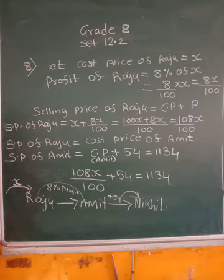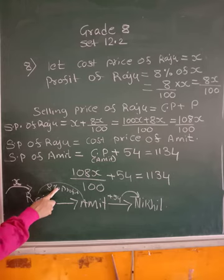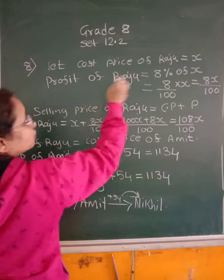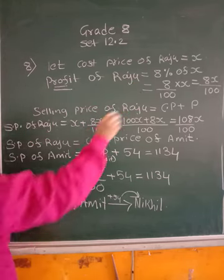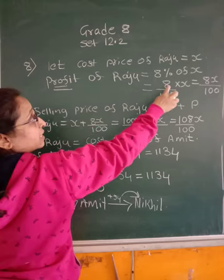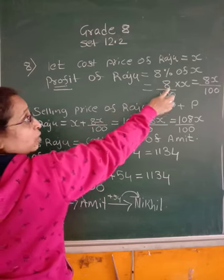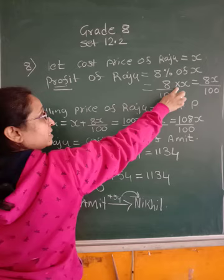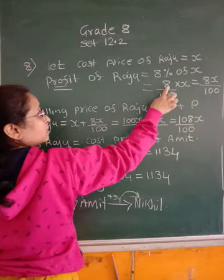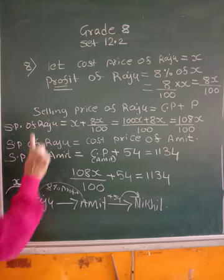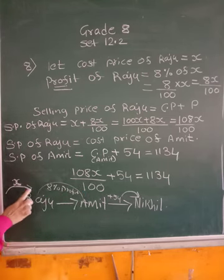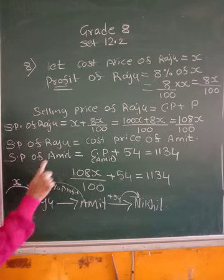Now profit Raju made is 8%, 8% of X. So 8% of X is profit. Now how much it is, 8% of X and X as it is. If you work out this, 8 into X is X upon 100. This is profit. So he got profit of 8X upon 100 rupees.